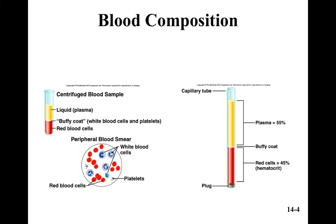The amount of blood someone has depends on how big they are, how hydrated they are — their fluid concentration — their electrolyte concentration, and how much adipose tissue they have. Blood makes up about eight percent of your body weight, and each person on average has about five liters of blood.